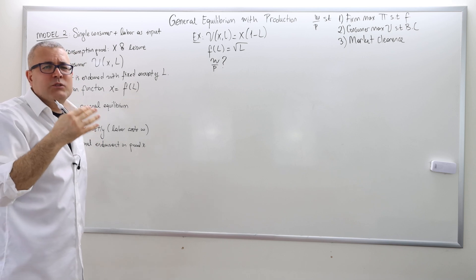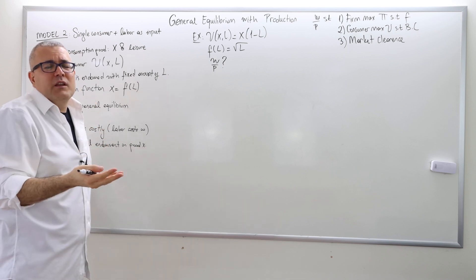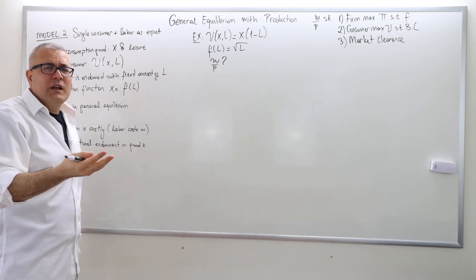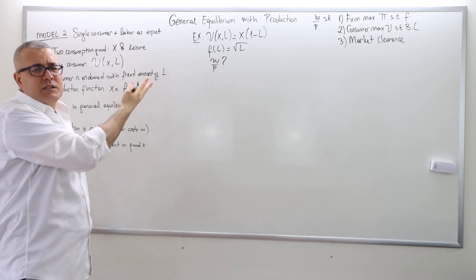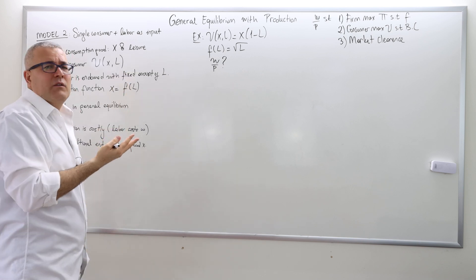Think about this endowment of one as like 24 hours — working with one is easier than 24. So for that reason, we normalize it to one rather than 24.